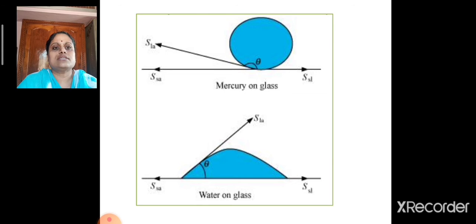In this first figure we can see that the droplet is spherical in shape. The angle of contact is marked as angle theta, that is the angle between tangent to the liquid surface at the point of contact and the solid surface which is inside the liquid.